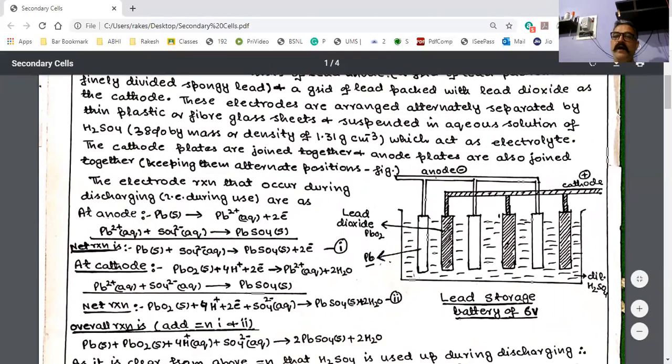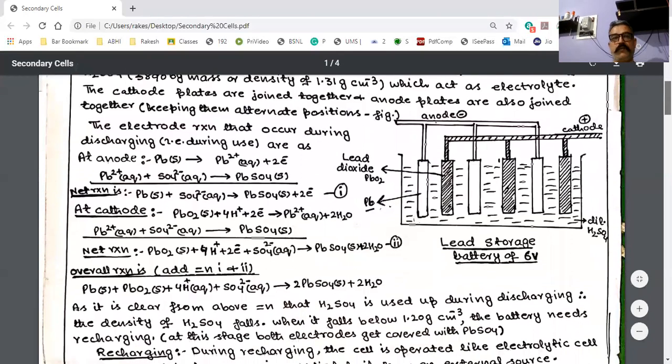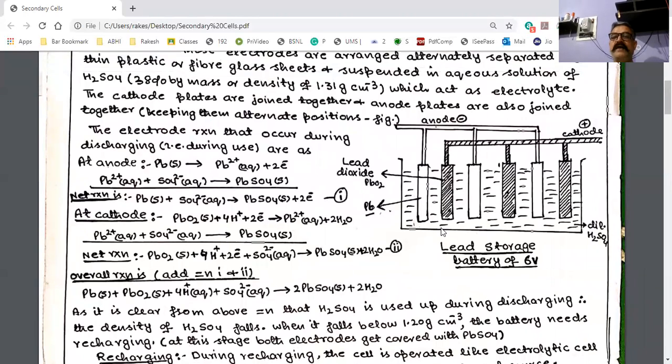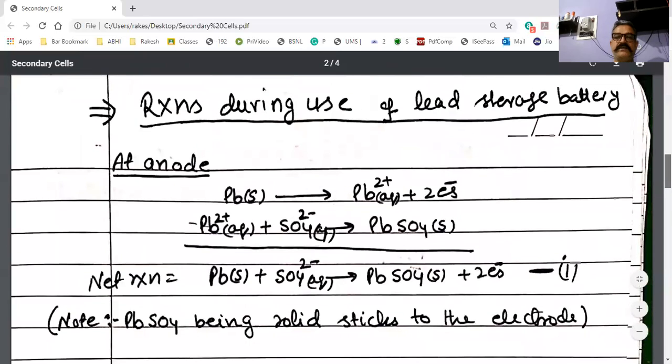Now we have to study the cell reactions. As I told you, first it will work as an electrochemical cell. When connections are made, spontaneous redox reaction occurs and it produces electrical energy for us. During its discharging or during its use, when you use it as a source of electrical energy, the following reactions occur. At anode, what is made? Anode is made of lead.